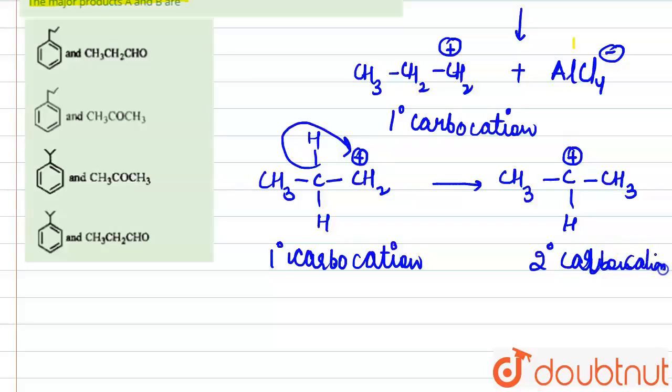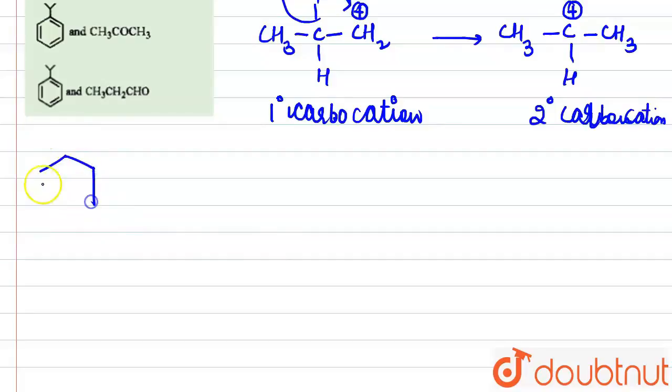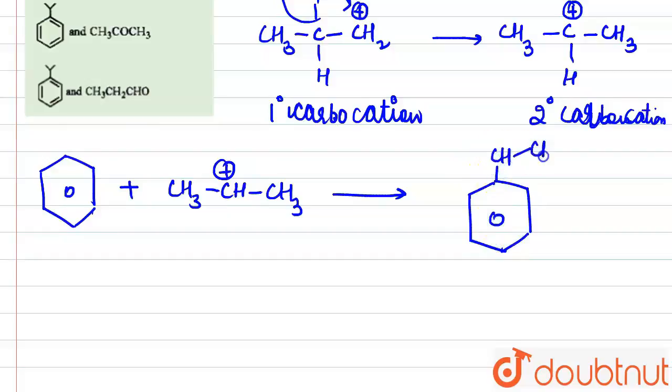So now benzene will react with this two degree carbocation. Being the nucleophile, benzene will donate its electron pair, that is pi bond, to this carbon, and this carbon will be attached to the benzene ring like this: here CH and here two methyl groups. So this is cumene. So the product A is cumene.